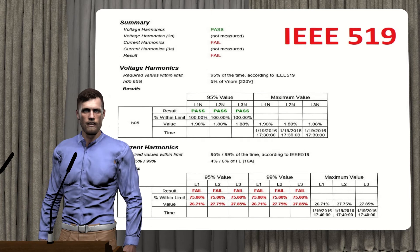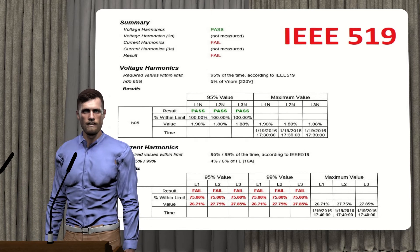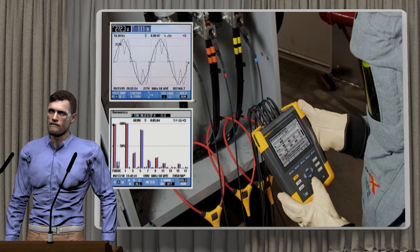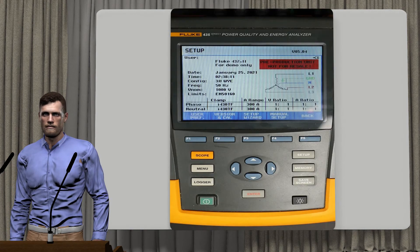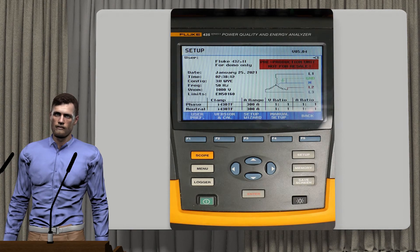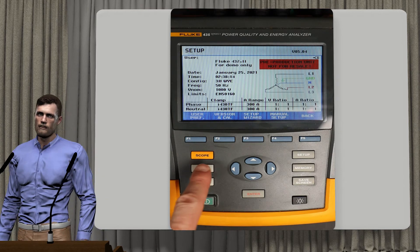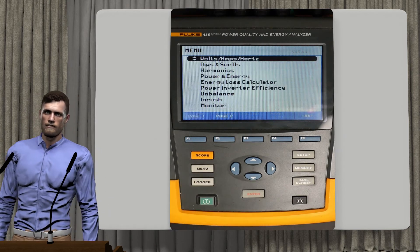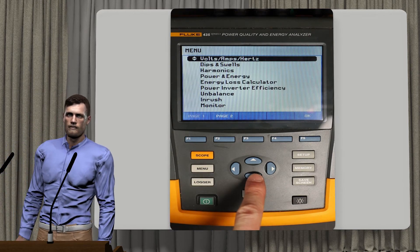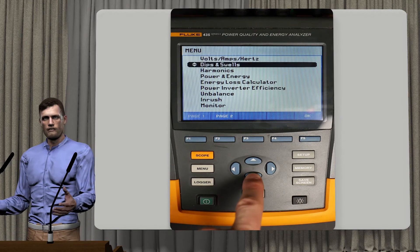Taking into account all that has been seen, we can now get down to work and make a complete analysis of the harmonics of both voltage and current. Now we are going to see an example of the possibilities offered by a power quality analyzer for the analysis of harmonics. For this demonstration I will use a Fluke 435.